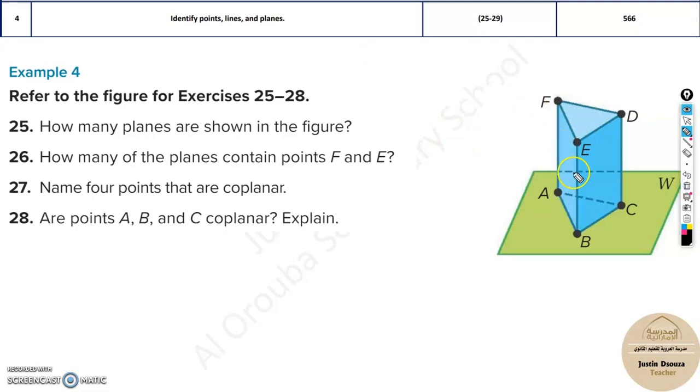Whereas a plane, see over here, this is a two-dimension. Point is a zero-dimension, line is a one-dimension, and plane is two-dimension. Over here, in the plane, you can see there's length and height. So there are two dimensions over here. A plane is something like a table, you know, this is a plane.